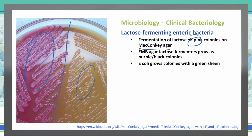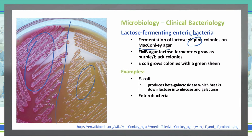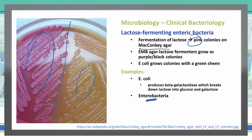What are examples of these lactose-fermenting enteric bacteria? Well, we just mentioned one, specifically E. coli. E. coli produces beta-galactosidase, which breaks down the lactose into glucose and galactose — so there's our lactose fermenting. Another one is Enterobacter, and then finally Klebsiella is another example of these lactose-fermenting enteric bacteria.